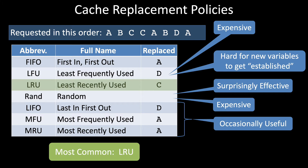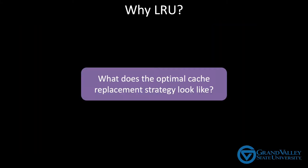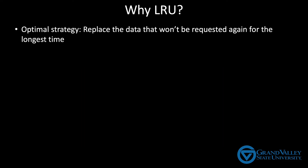Let's begin by discussing why LRU is so popular and what makes it so effective. To understand why LRU does such a good job, we first need to understand what the optimal strategy looks like. If you were omniscient, how would you decide which block to evict? The optimal strategy is to replace whichever block won't be requested again for the longest amount of time. The longer you go before you have to bring the data back in, the better your performance is. But we can't actually implement this strategy because it requires knowing the future.